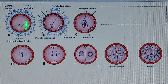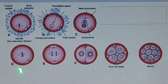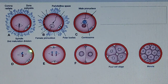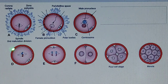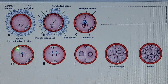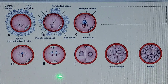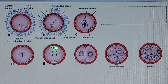This zygote — the fusion of the sperm and the ovum — has 46 chromosomes. The gamete has a haploid number of chromosomes, but this zygote again forms the diploid number of chromosomes, that means 46 chromosomes. This 46-chromosome-containing zygote then starts to divide.